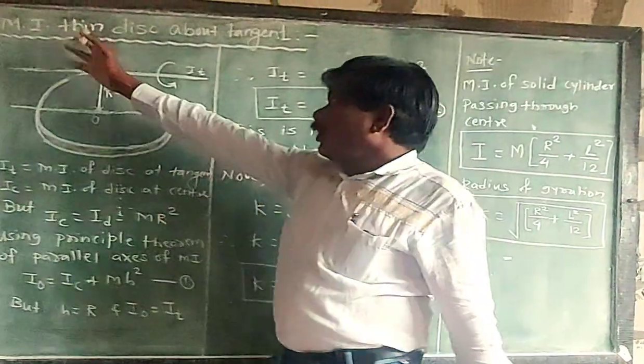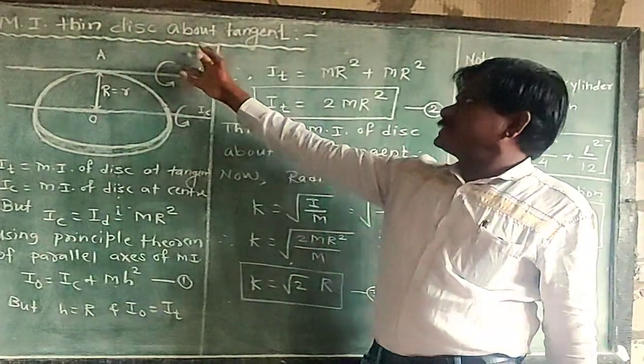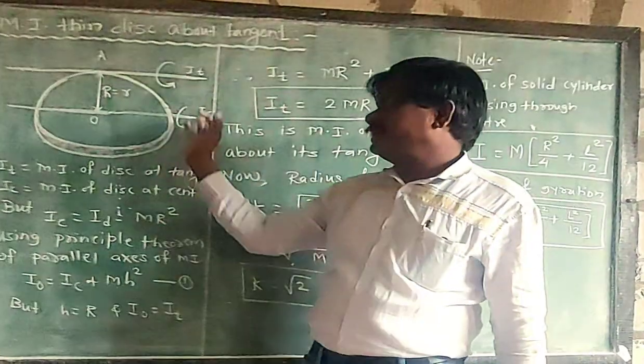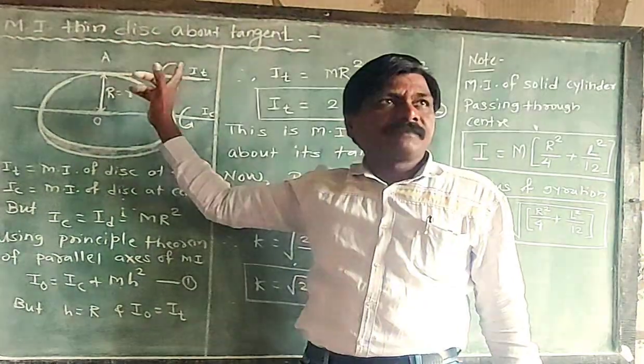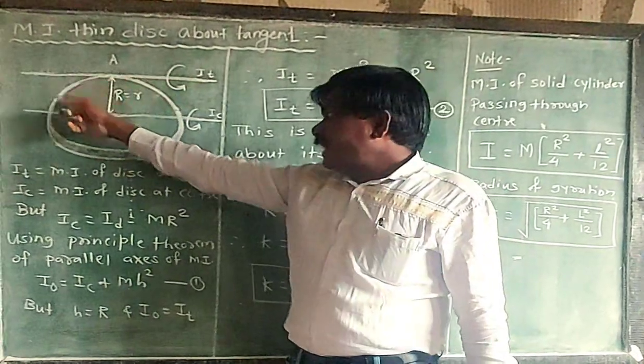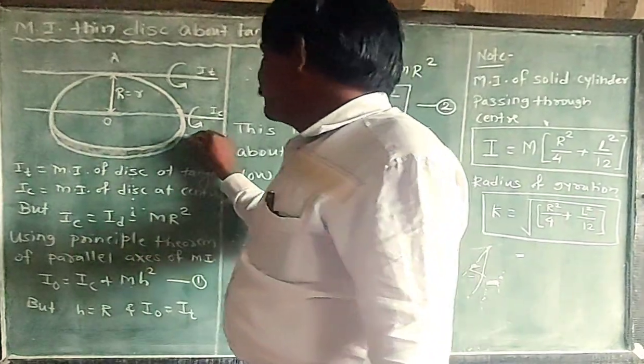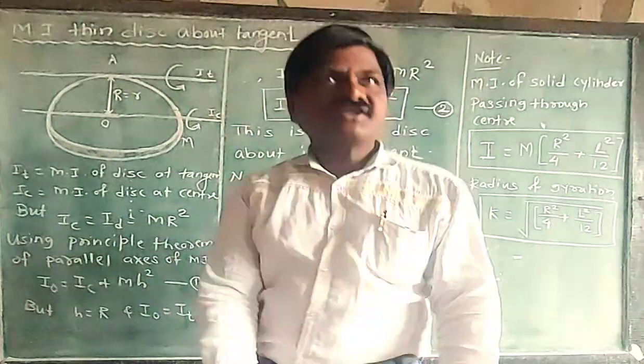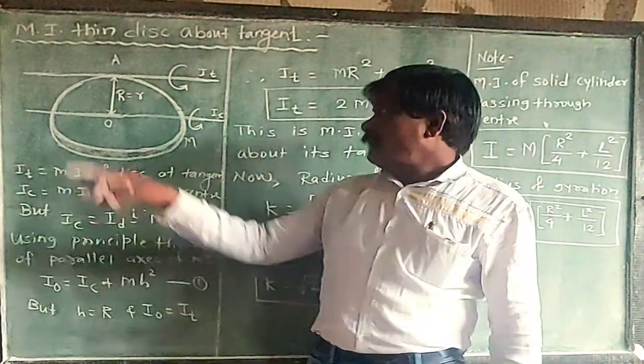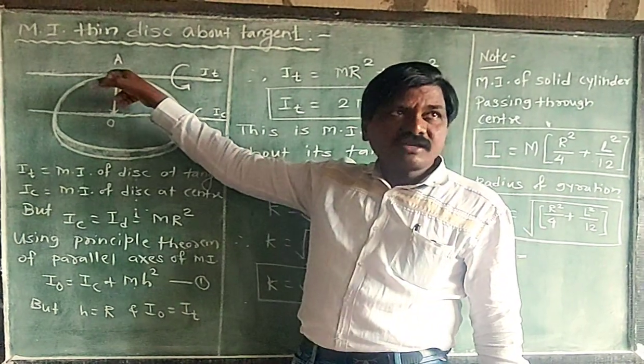For moment of inertia of a thin uniform disc, how about it is a tangent? Tangent means at the edge. Suppose this is a thin uniform disc. Capital M is the mass of the disc, capital R is the radius of the disc.